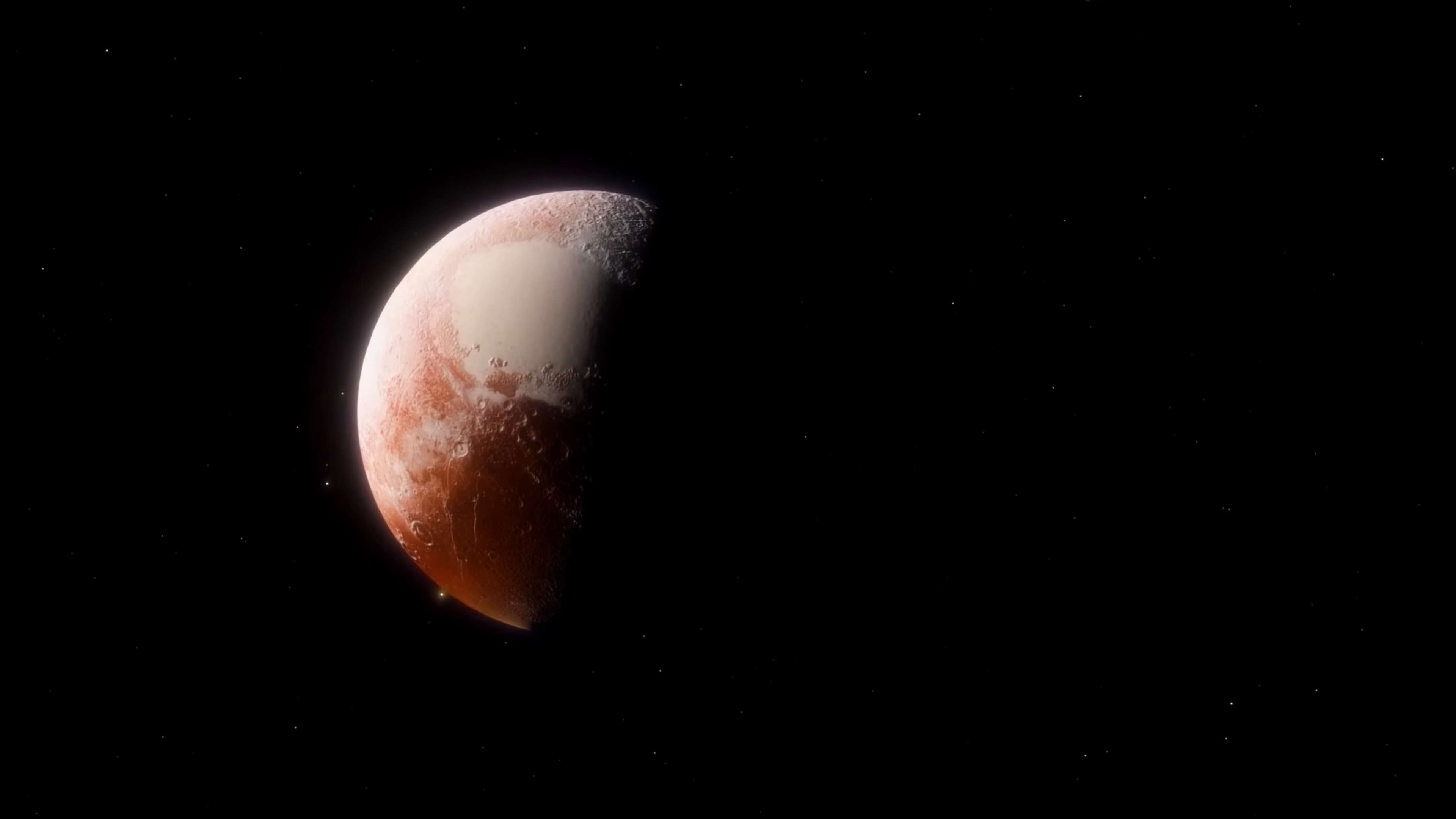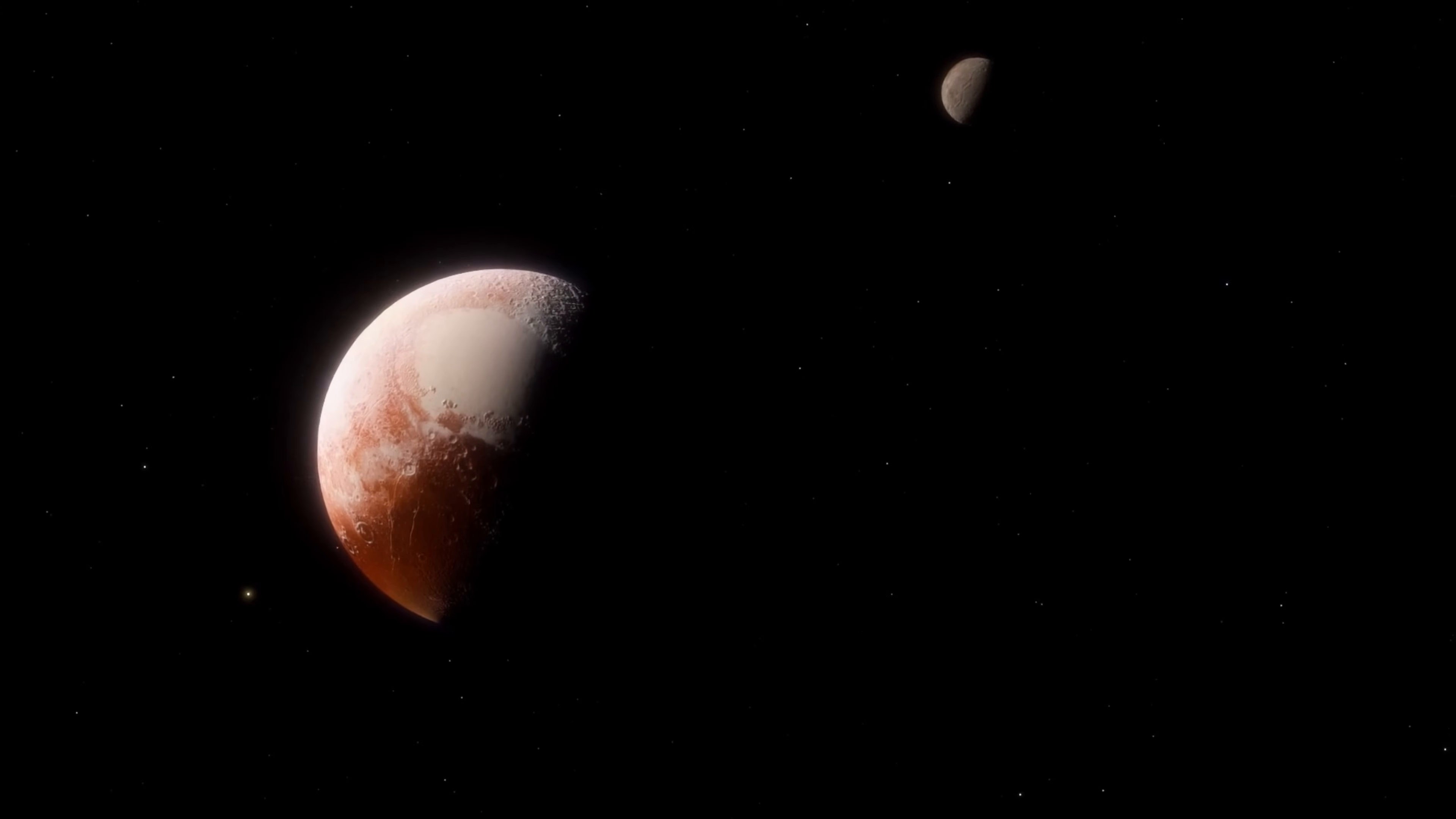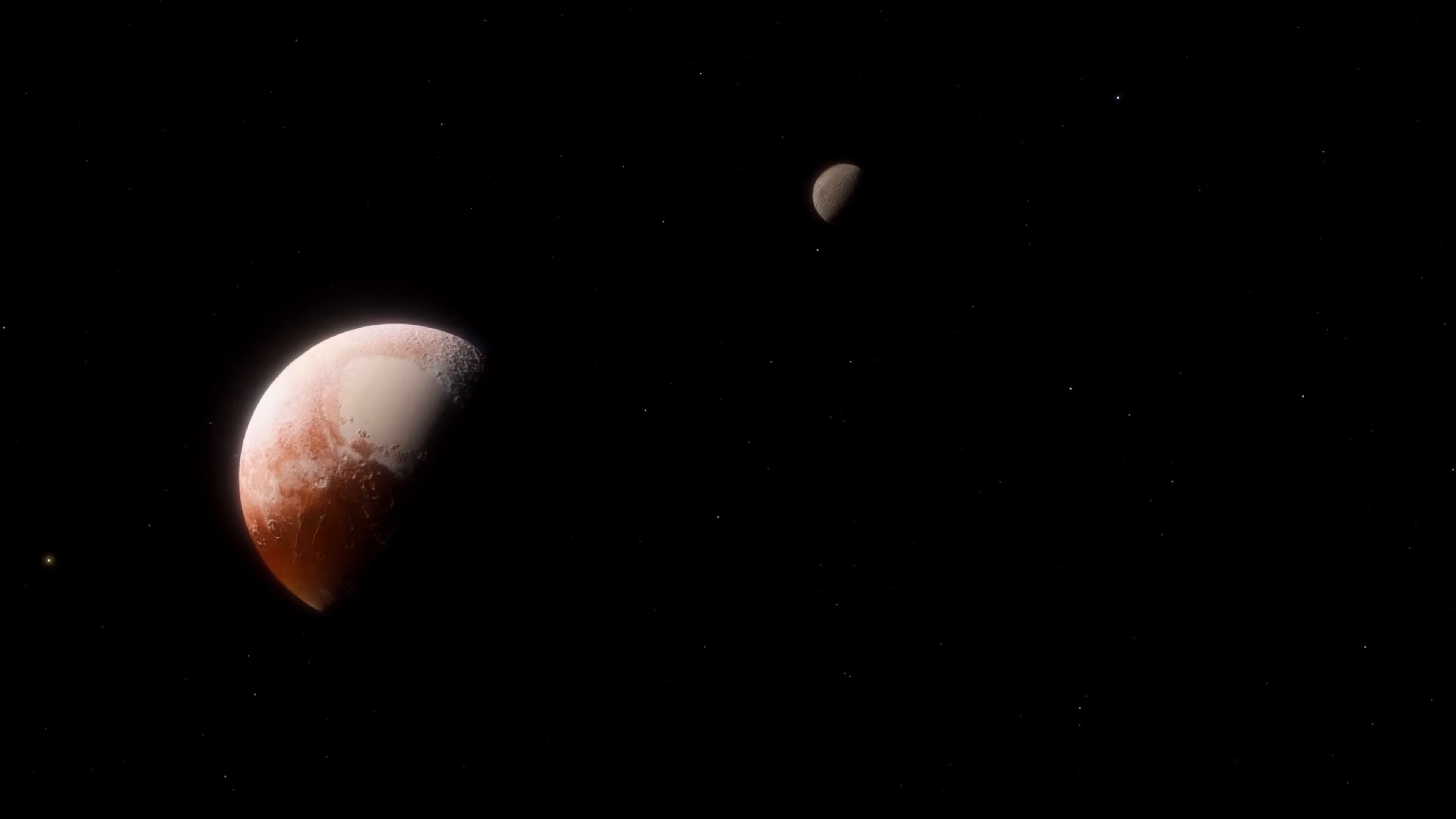Besides these eight major planets, there are also a number of smaller planet-like objects in our solar system called dwarf planets. Pluto is the most famous dwarf planet because it was considered to be a major planet until 2006 when astronomers discovered other small planet-like objects in our solar system. Many astronomers from all over the world met to discuss a new definition of what makes a planet.